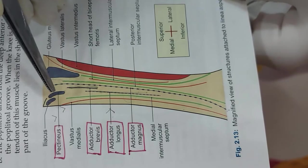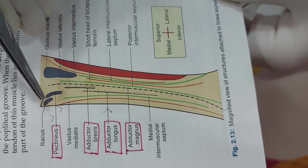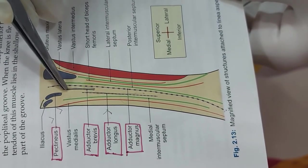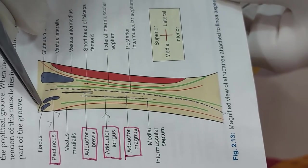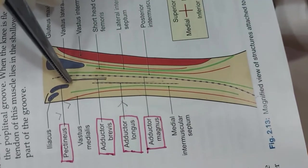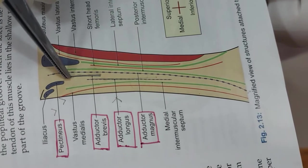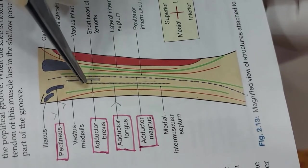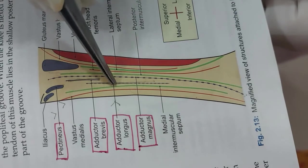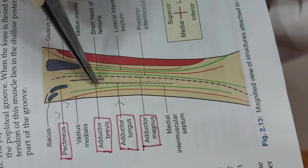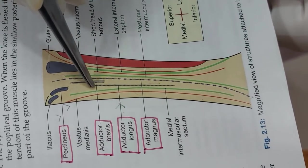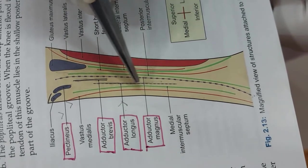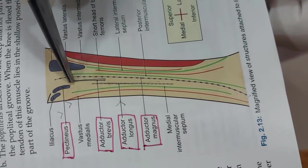We will study the insertions in the same sequence. The pectineus muscle is inserted onto a line extending from the lesser trochanter to the linea aspera. The adductor longus muscle is inserted onto the medial lip of the linea aspera.